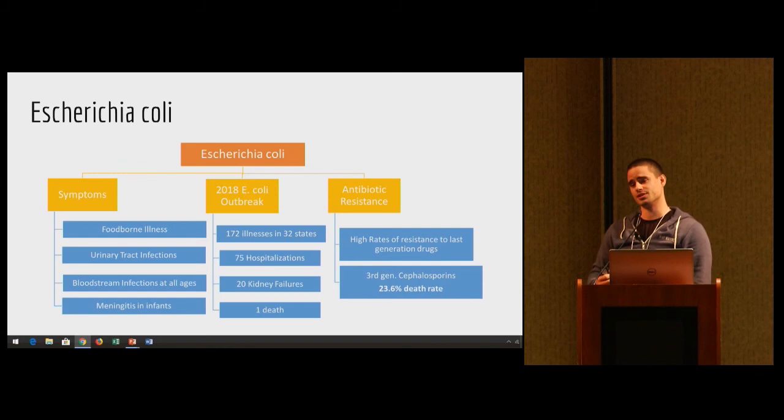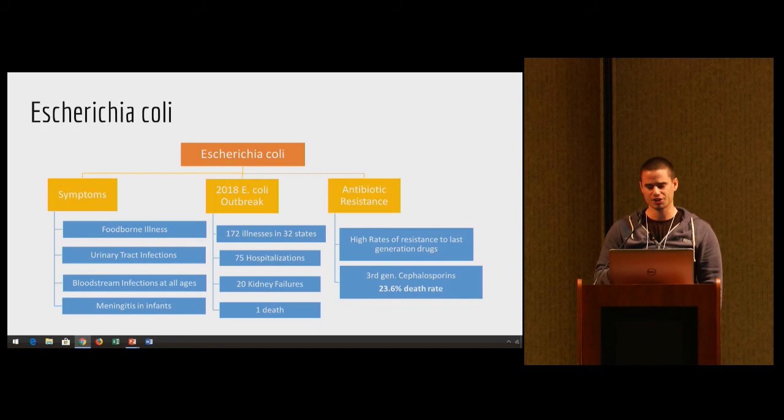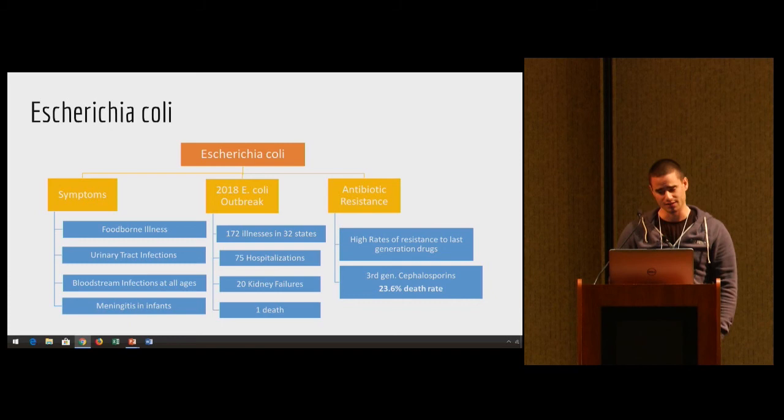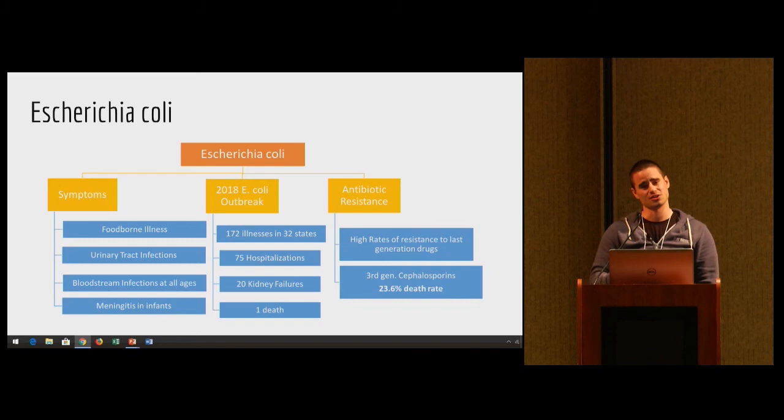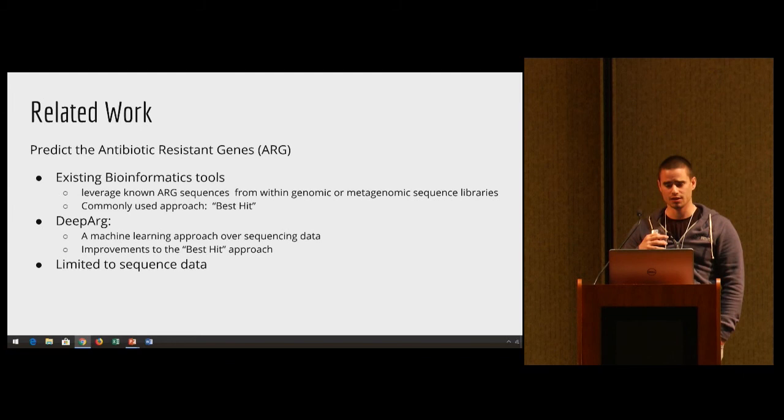In terms of antibiotic resistance, there have been high rates of resistance to last generation drugs, which are kind of like our last line of defense in fighting disease. For example, the third generation cephalosporins, which is a late stage antibiotic - if a strand of E. coli can resist this type of antibiotic, there's a 23.6% death rate. So it is a pretty significant issue.